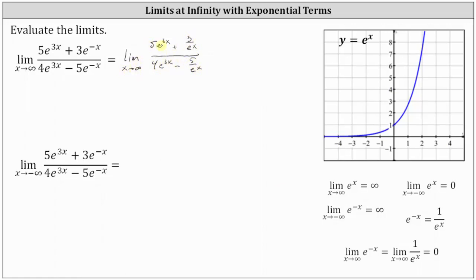As x approaches infinity, 5 times e to the power of 3x approaches infinity. 3 divided by e to the x approaches 0, because the numerator is the constant 3 and the denominator increases without bound. 4 times e to the power of 3x approaches infinity as x approaches infinity, and 5 divided by e to the x approaches 0. So notice we have the indeterminate form of infinity divided by infinity, which means we'll have to change the form of the function to determine the limit. We'll take a look at two methods for doing this.